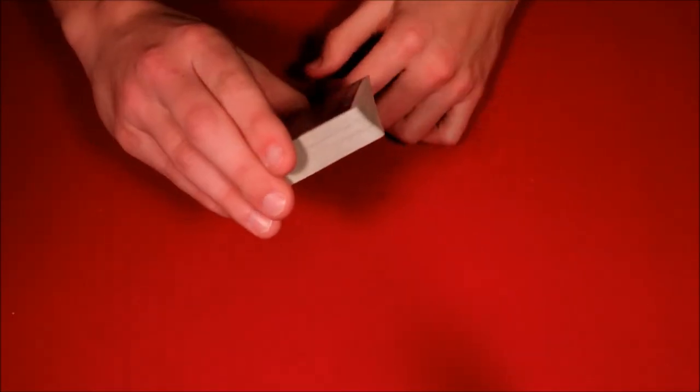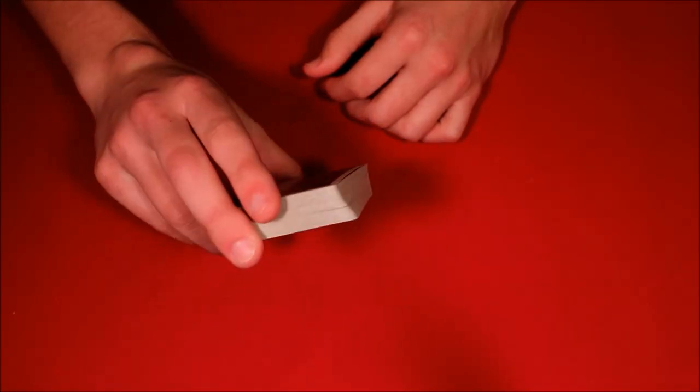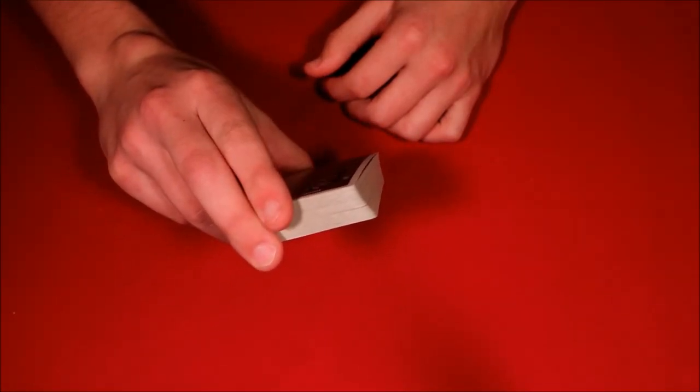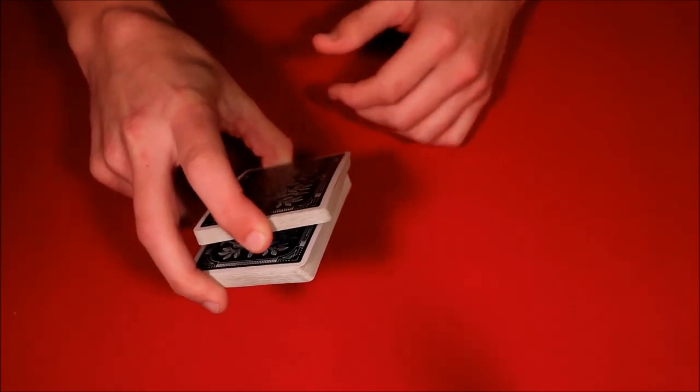You do a swing cut by holding the cards in biddle grip with your thumb at the bottom, your ring finger at the top here as well as your index finger. Use your index finger to take a portion of the deck away - this is going to be the top - you slide this in your hand.